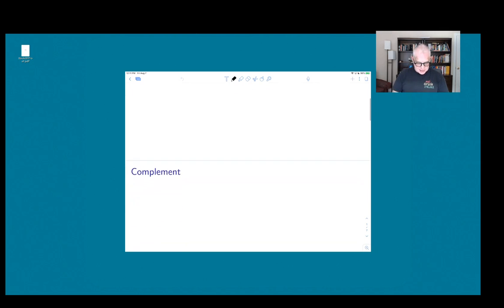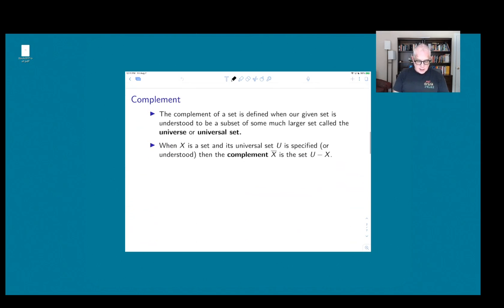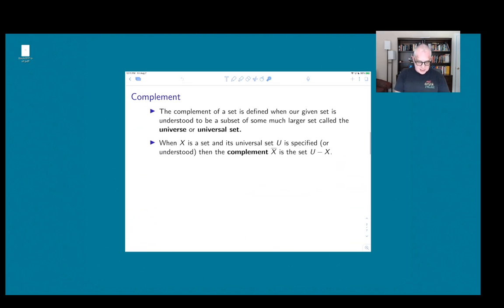So what is the set complement? The complement of a set is defined in a particular situation when we're looking at a set which is a subset of a bigger set called the universal set. And when we're given a set which is a subset of a big universal set, then we say that the complement of X, which we write with this bar over it, is just the set U minus X. So it's everything which is in the universal set, but which is not in X.